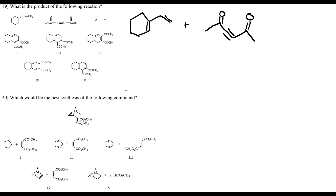Question 19: working out the Diels-Alder product. Carbon 5 has a ketone, carbon 6 has a ketone, and there's a double bond between C5-C6 in the dienophile. After the reaction: the cyclohexane base ring forms, a new double bond appears between C2-C3, and carbons 5 and 6 each carry their ketone groups. Checking the answer choices: number 1 looks correct — it has the right double bond position and ketone placements. Number 2 is missing the double bond between C5-C6. Answer: A (number 1).